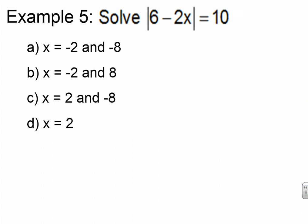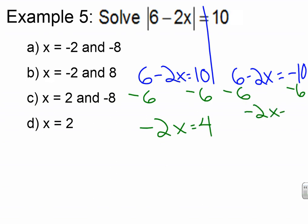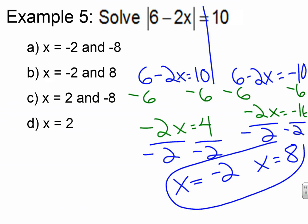Pause the video now as you try example five. Press play to go over your answer. We rewrite it twice because everything is inside the absolute value bars — once with the positive answer, once with the negative. We subtract 6: negative 2X equals 4. Subtract 6 on the other side: negative 2X equals negative 16. Divide by negative 2. We get X equals negative 2 and X equals positive 8. Final answers, and that matches up with letter B.